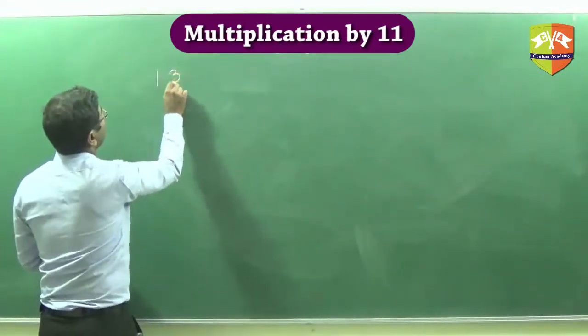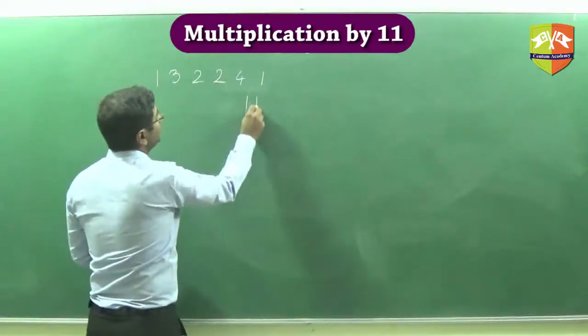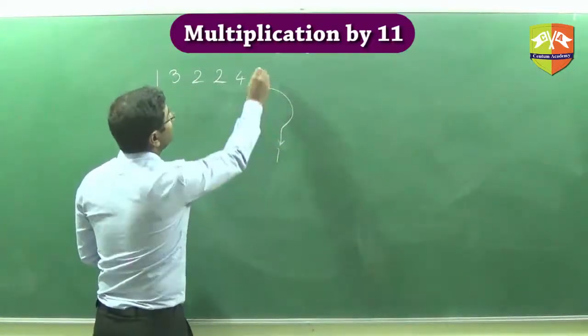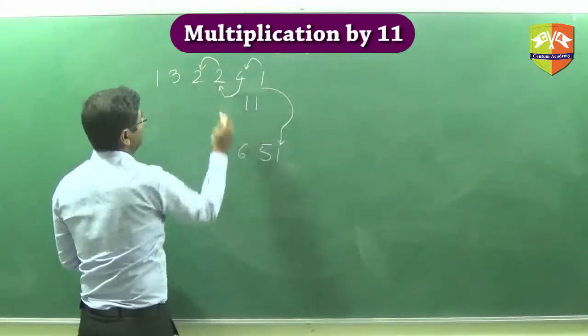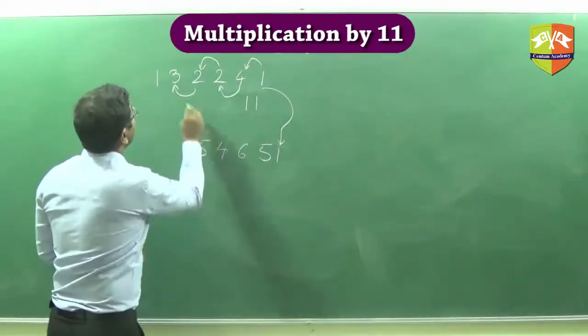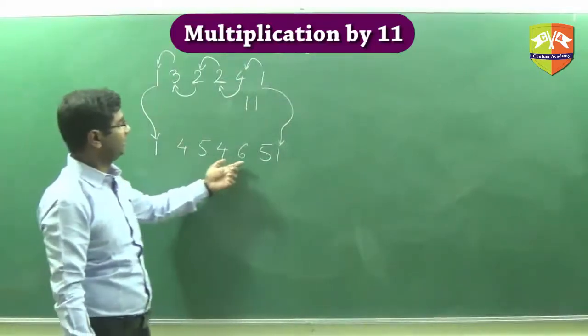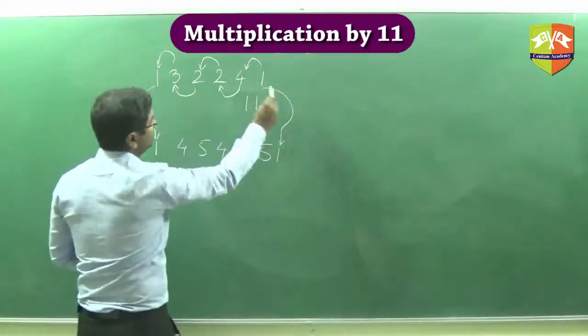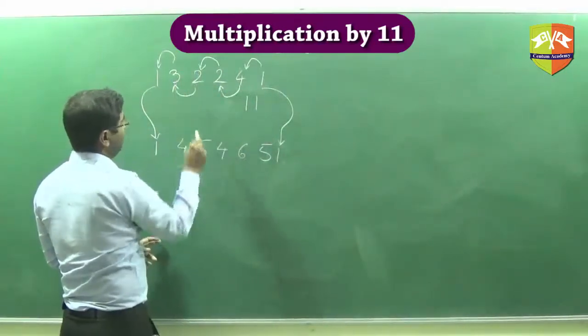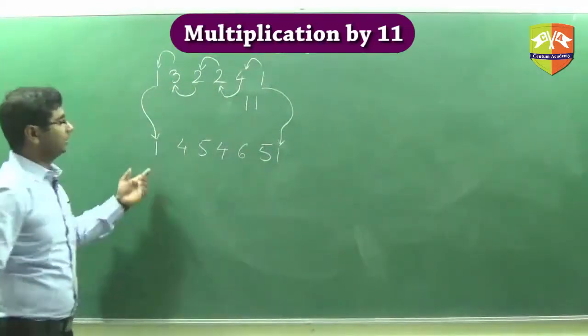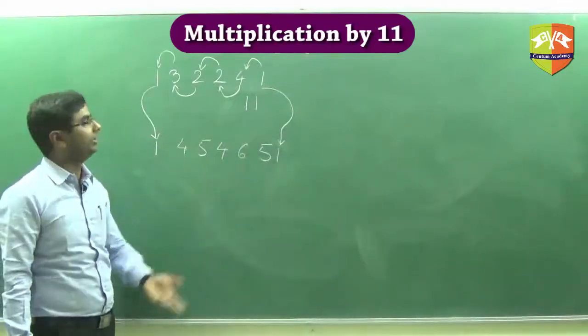Now we are going to check a larger number and see whether the same technique works here also. Let me take a number like 1, 3, 2, 2, 4, 1. I have to multiply this number by 11. Our method says you write this 1 directly here, then add these 2 you get 5, then add these 2 you get 6, this 1 is 4, this 1 is 5, this 1 again you get 4 and finally this digit 1. Hence the answer is 1, 4, 5, 4, 6, 5, 1. We just took this 1 here then added 1, 2, 4 we got 5, 4 plus 2 is 6, 2 plus 2 is 4, then 2 plus 3 is 5, 3 plus 1 is 4 and then this number 1 here. If you have done a lot of practice you do not even need to write anything, you can do it mentally.